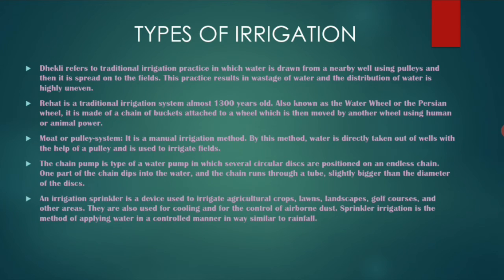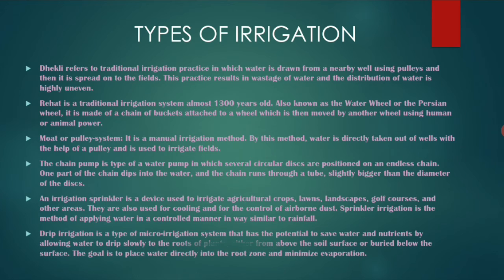Next is sprinkler irrigation, which is used in agricultural crops, lawns, landscapes, golf courses, and other areas. It is also used for cooling and controlling airborne dust during summers — when vehicles pass through roads and nearby areas the dust rises, and at that time sprinkler irrigation is used. Water wastage is also controlled in sprinkler irrigation.